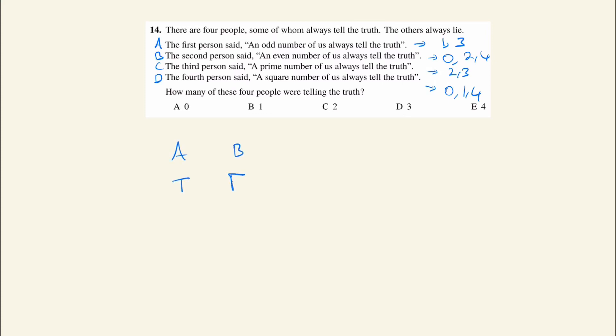So at least one person is always telling the truth. The same occurs with C and D. No prime number is a square number, so whatever C is saying, D is saying the opposite.